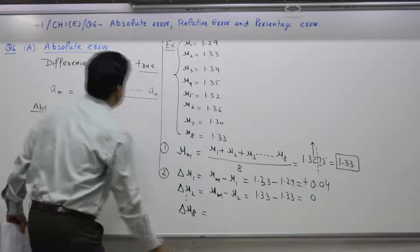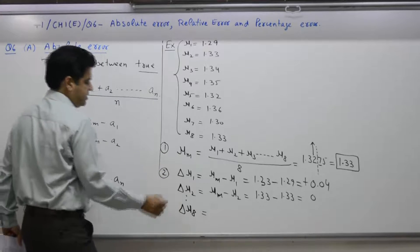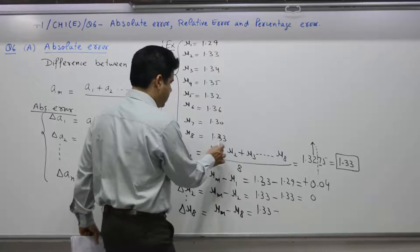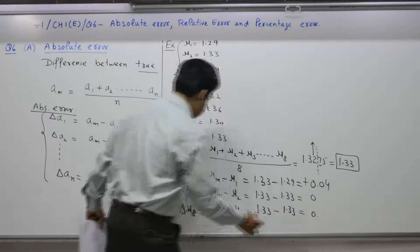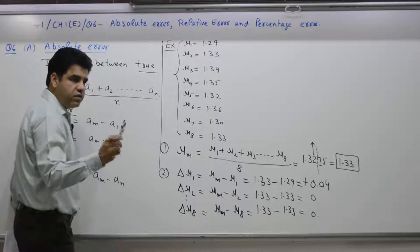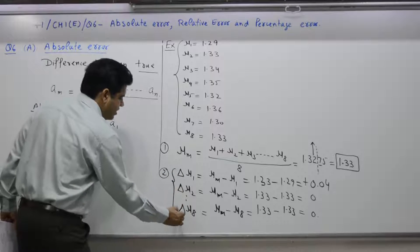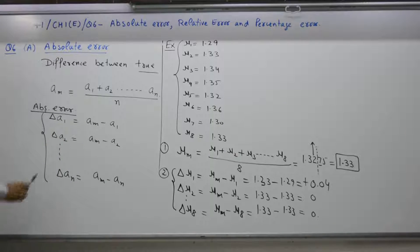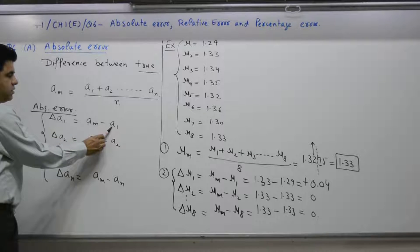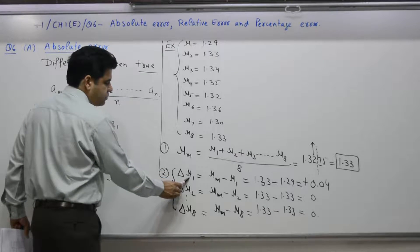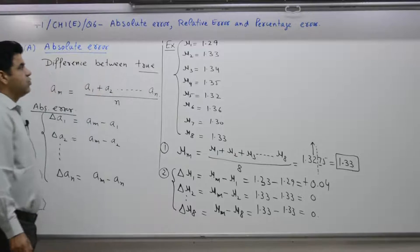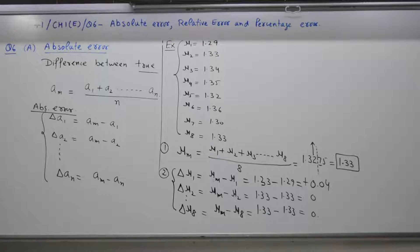Absolute error for the first case, second case, up to the eighth case. Absolute error is the difference between true value and measured value. Mean value minus measured value gives the absolute error in each case. Absolute error is the difference between the true value and the measured value of a quantity.